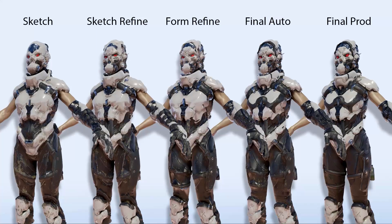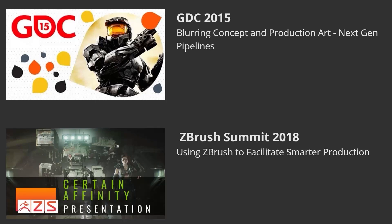For example, if I'm just going to get something into engine quickly that's representative and performant enough, we can judge whether it's worthwhile to pursue all the way to a finished product. There are no surprises — all departments are evaluating it in context, in engine, in the end experience. For more on this, there are presentations from GDC 2015 and ZBrush Summit 2018 where I cover it for an hour and change.